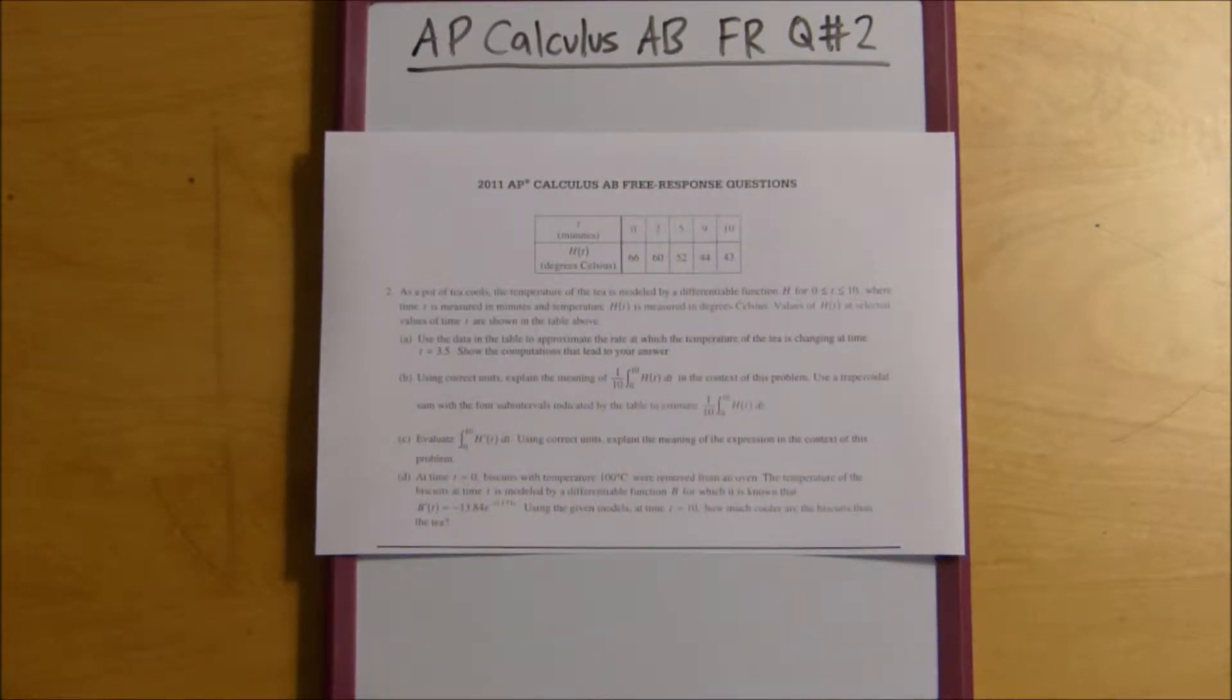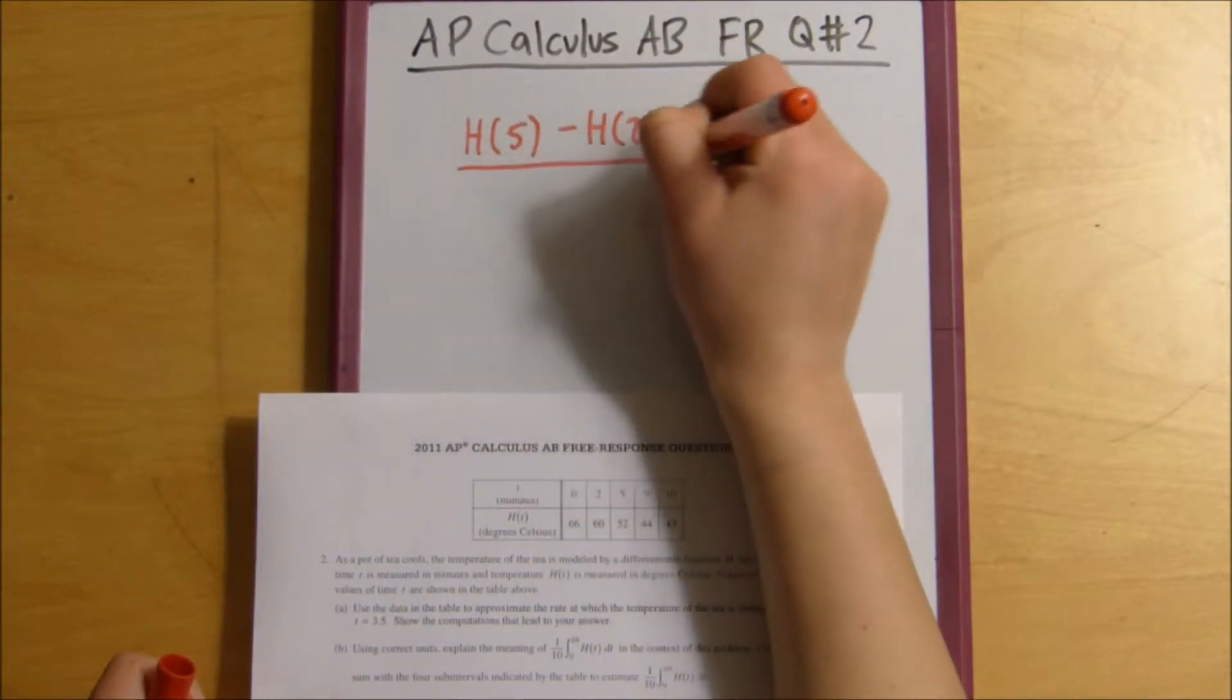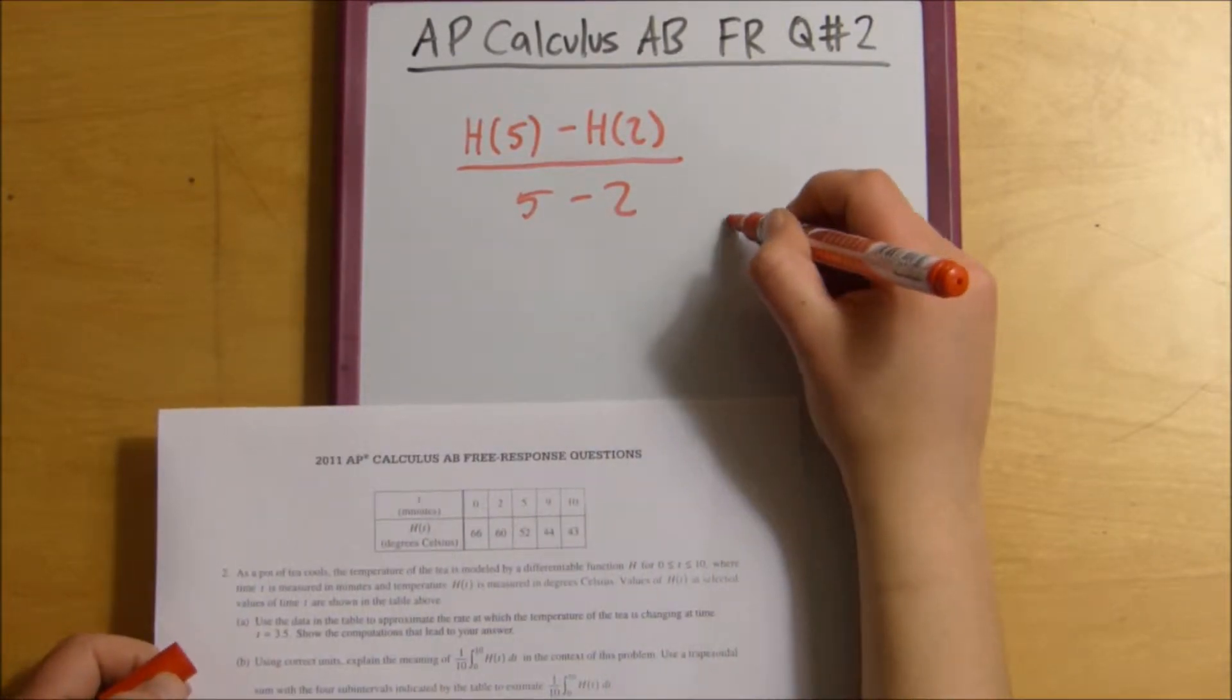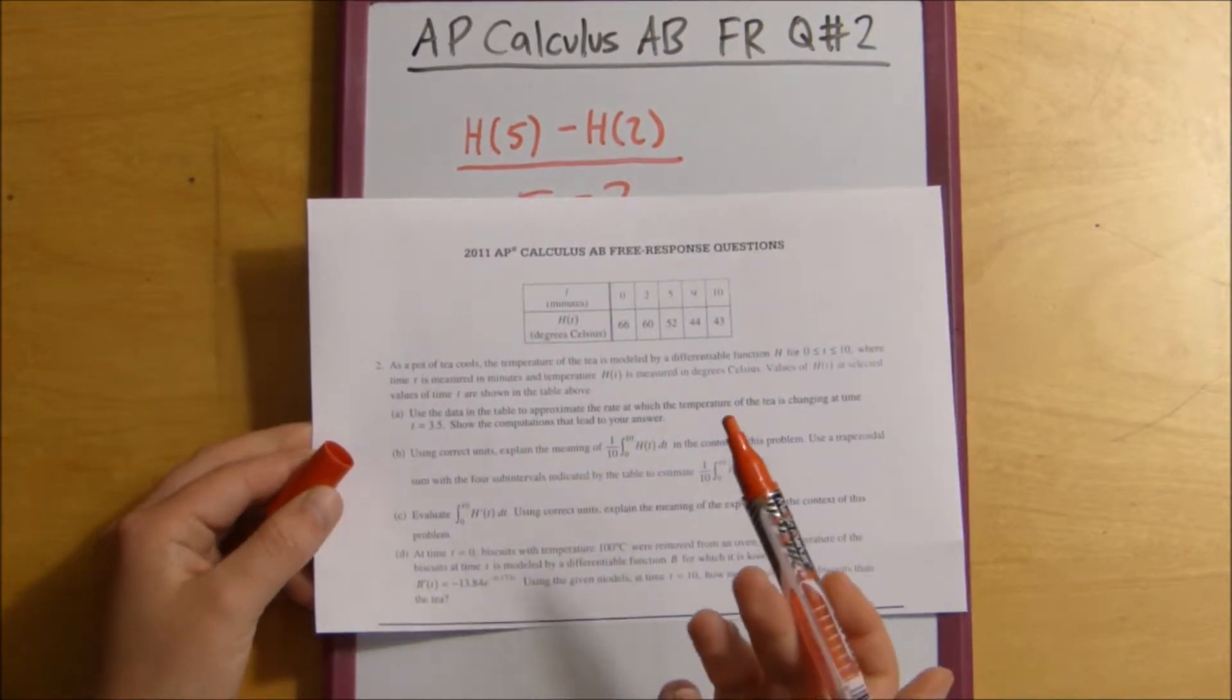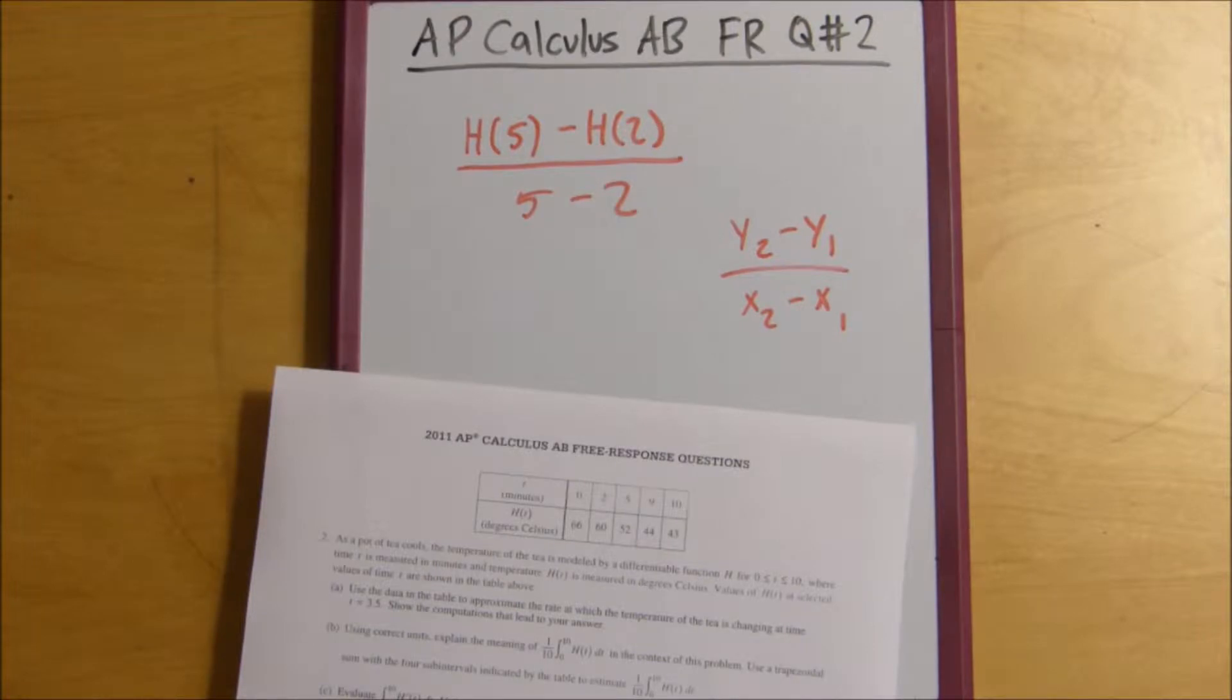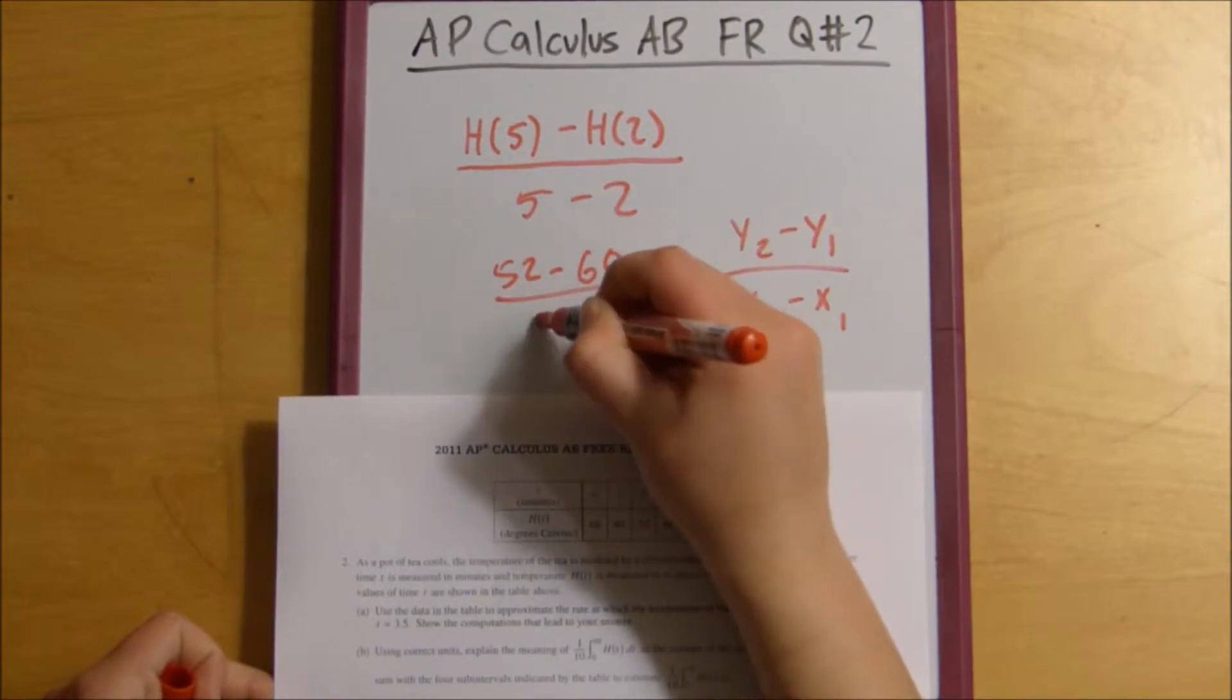So to find the rate, what we would do is simply find H of 5 minus H of 2 divided by 5 minus 2. It's kind of like if you were to find the slope of a line, you would find y2 minus y1 over x2 minus x1, right? Essentially the rate, the derivative, is the slope. You're just trying to find what it would be like at 3.5, which would be the midpoint of that. So because this data table tells us what H of 5 and H of 2 is, we can simply plug that in and say 52 minus 60 over 5 minus 2.